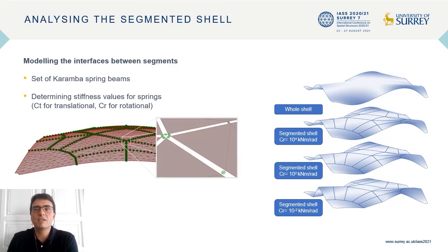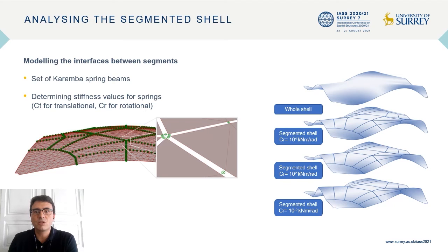The subsequent segmented shell analysis stage models how segments interact with each other. The interface between each pair of segments is modeled in Karamba as a set of springs connecting the adjacent edges of each segment orthogonally. In order to simulate the shell segments' behavior, values for translation and rotation stiffness need to be specified. Through parametric studies, sensible intervals were defined for these values, which will be tested on physical prototypes of the segmented shell.